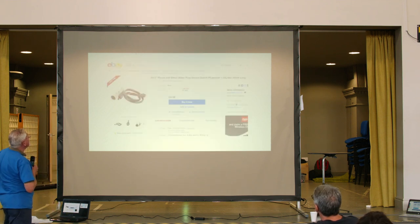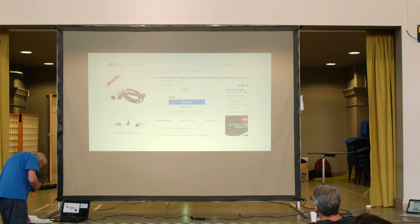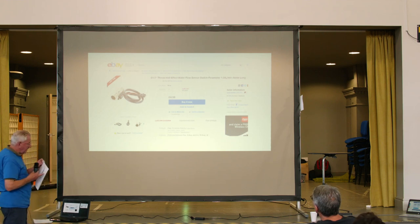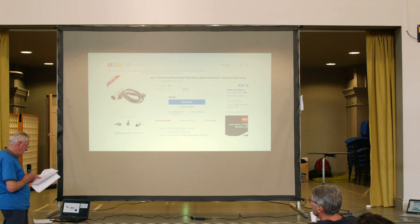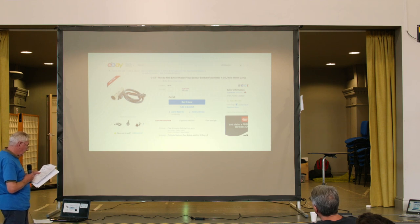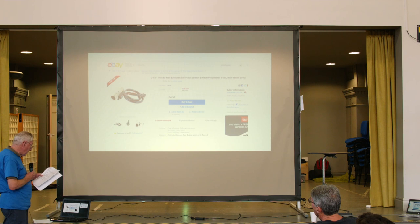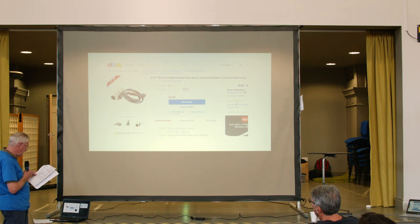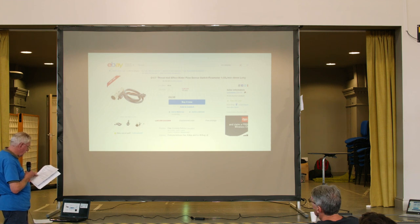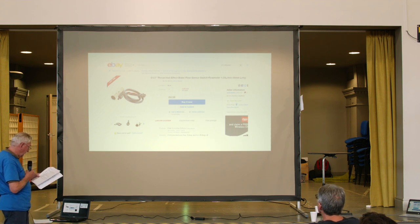The flow sensor is less than a fiver — a very nice little device. Unlike the analog sensors, it produces a stream of pulses at a frequency proportional to flow. Its output is connected to an Arduino digital input with a 3-core screened cable, same spec as the analog sensors. The Arduino software uses an interrupt routine to count the number of pulses received per second, and this count is then scaled to provide a volume reading in litres and a flow reading in litres per second.